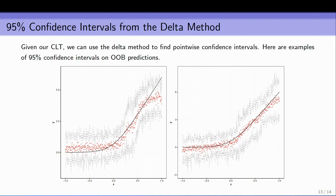Using the central limit theorem with the delta method lets us build confidence intervals. Shown here are 95% confidence intervals on the same simulation we've been examining: the signal is in black, random forest predictions in red on the left, local linear forest predictions in red on the right, with gray lines showing point-wise 95% confidence interval bounds. The random forest confidence intervals actually cross over the signal at the boundary, with about 88% coverage in simulations. The local linear confidence intervals are nicely centered on the truth with 95.5% average coverage.